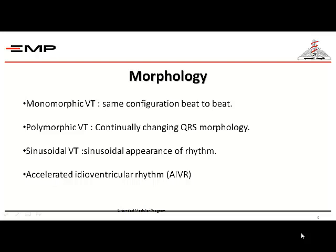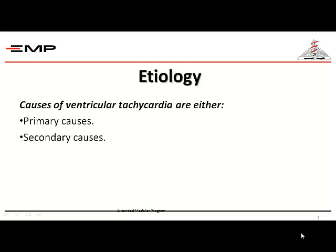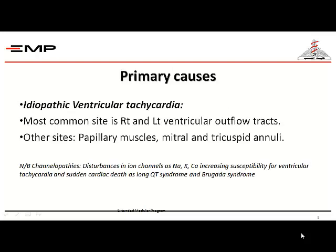There is also something called IVR or accelerated idioventricular rhythm, which we will discuss later. Regarding etiology, causes of ventricular tachycardia are either primary or secondary. Primary causes are idiopathic — meaning no clear identifiable cause. The most common site of idiopathic ventricular tachycardia is the right ventricle.